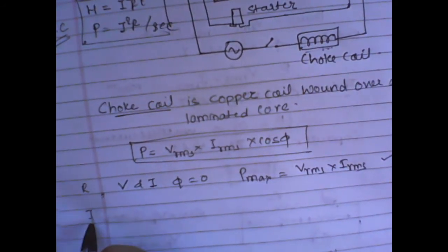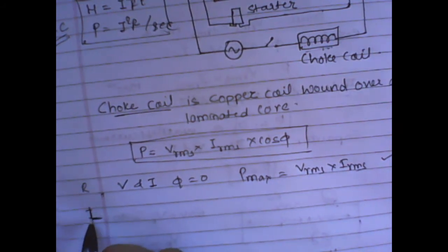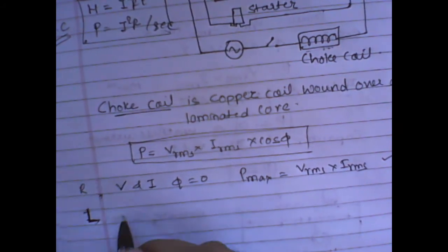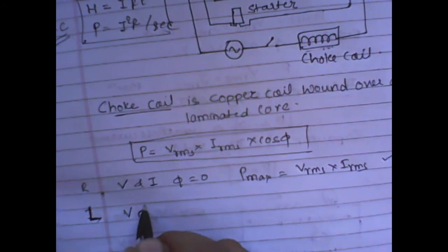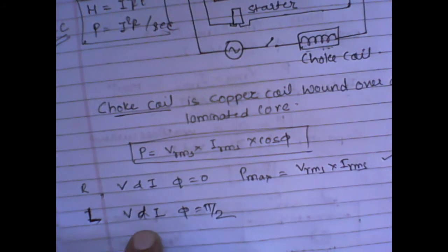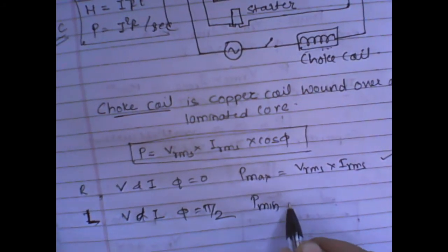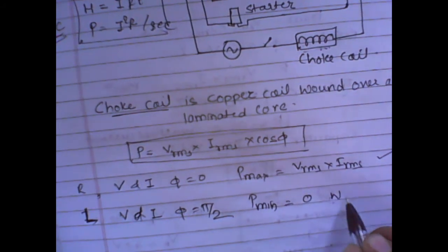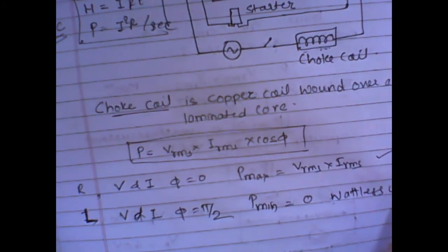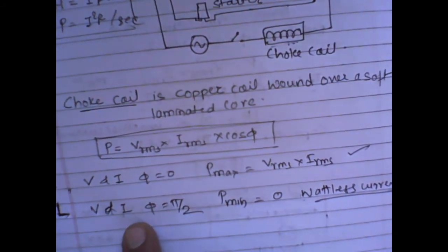But if I use an inductor coil L having inductance L, we know that V and I have a phase difference of π/2 because V leads the current. Here the power will be minimum, equal to zero, and in this case the current is said to be a wattless current.